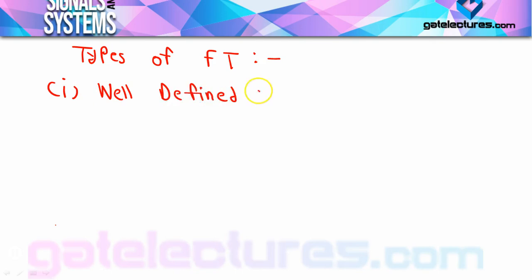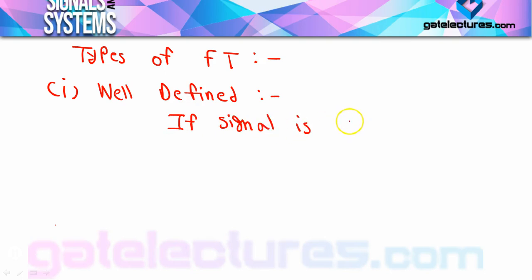If the signal x(t) for which you want to find the Fourier transform is absolutely integrable, then the Fourier transform of x(t) is well-defined. Let me give you an example of this.